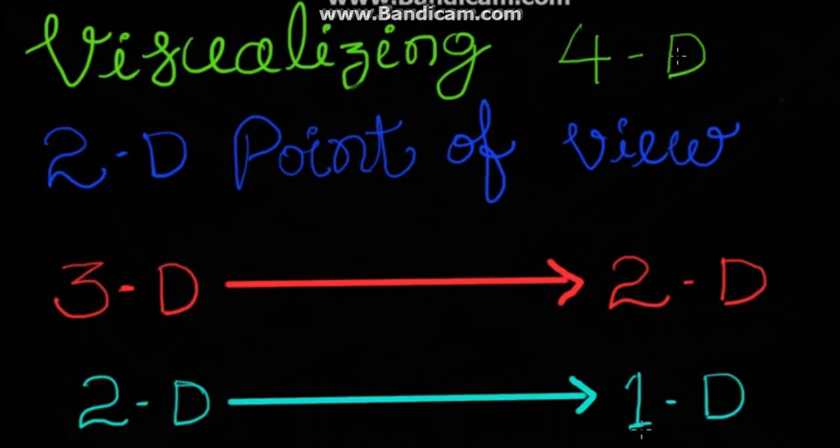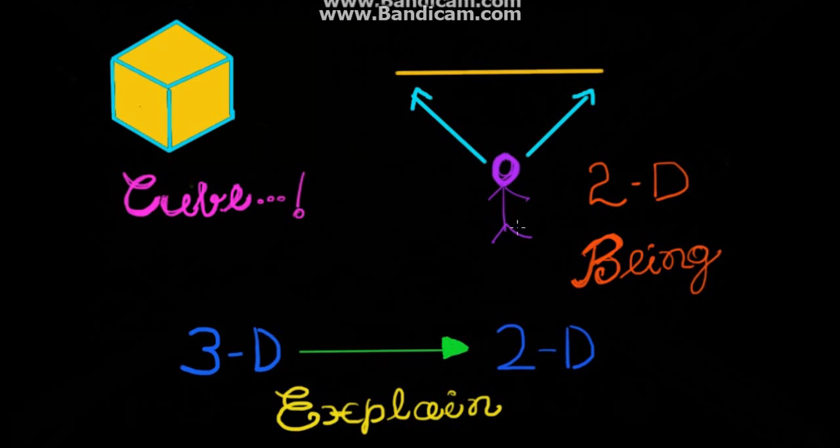Since we are visualizing 4D, let us take it from a 2D point of view. As you 3D beings have a 2D retina, hypothetically, 2D beings would have a 1D retina. Consider how we 3D beings may try to explain what a cube is like to a 2D being. We may try to draw a diagram of a cube. Thus, since this diagram can be entirely contained in a 2D surface, we may imagine that the 2D being would see it as we do, a hexagon with 3 lines within, meeting at the center.